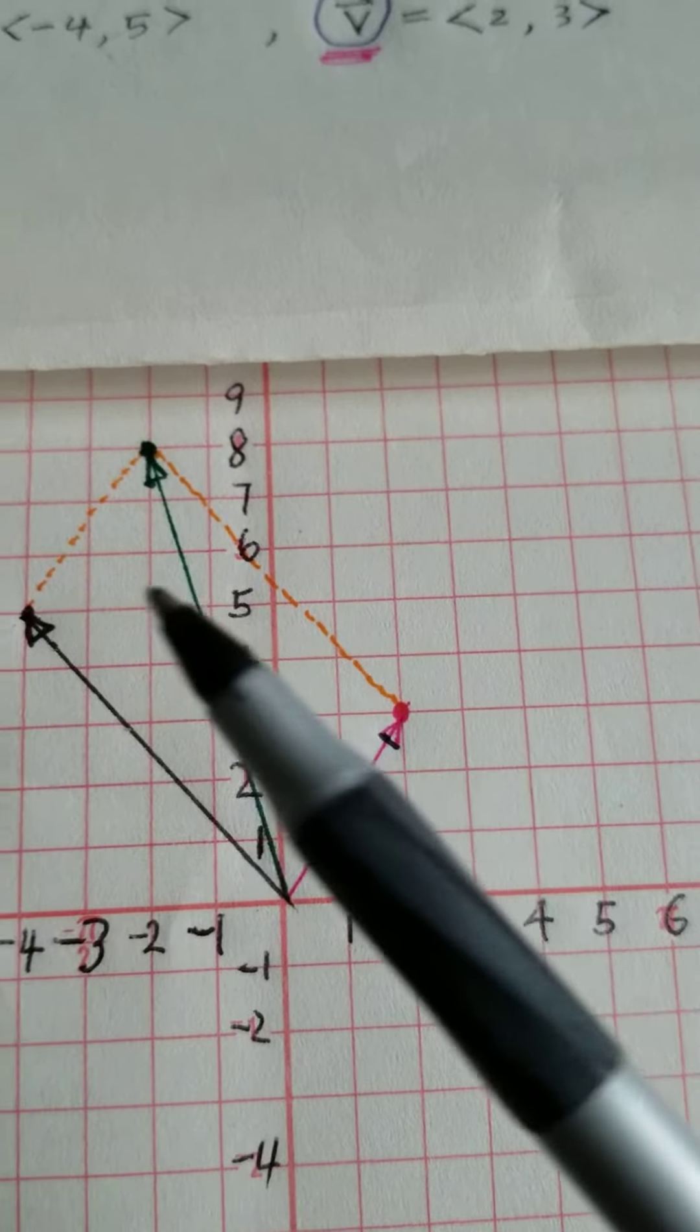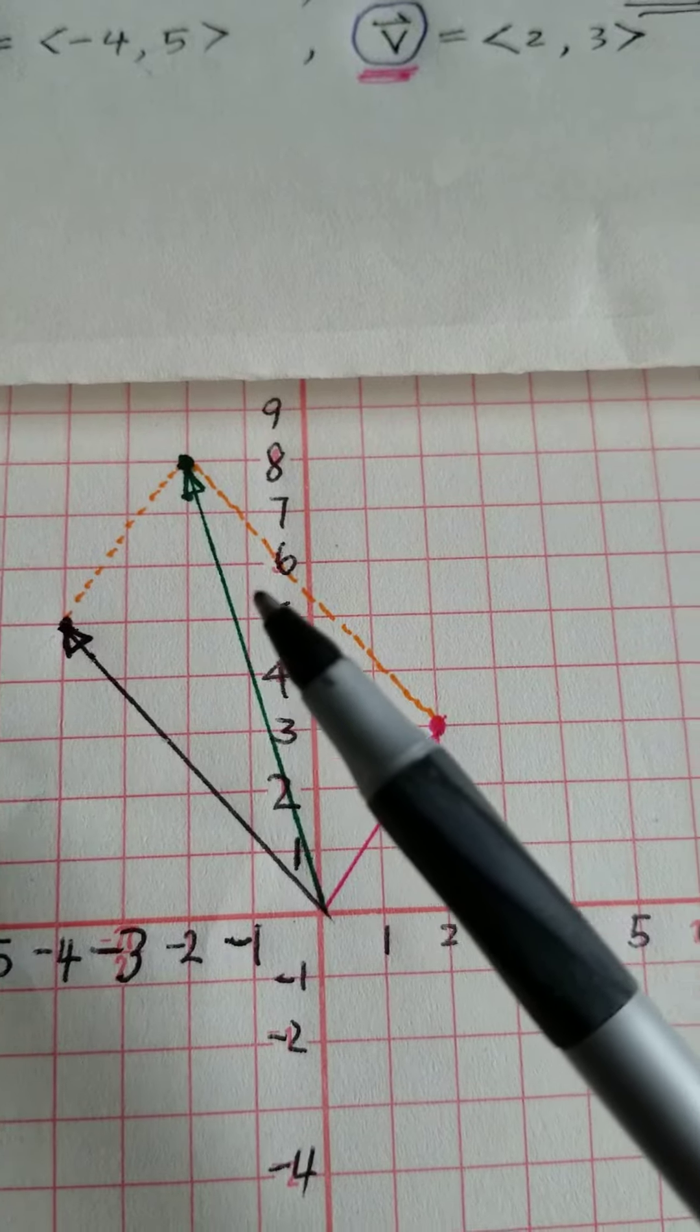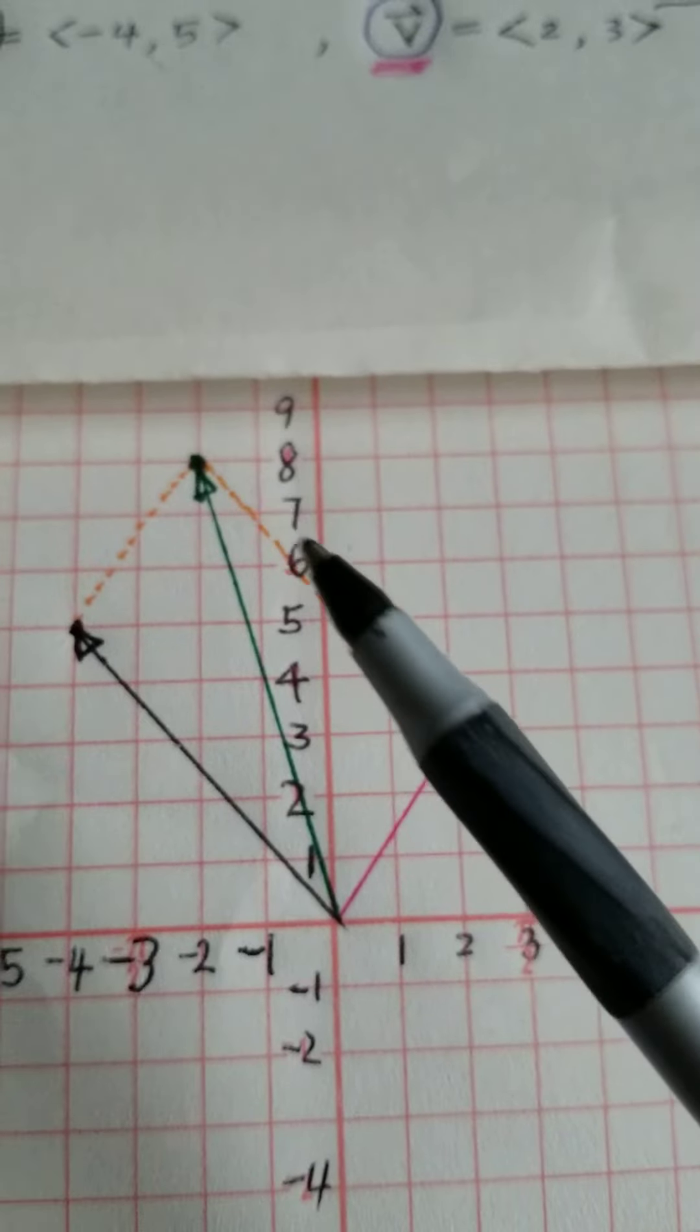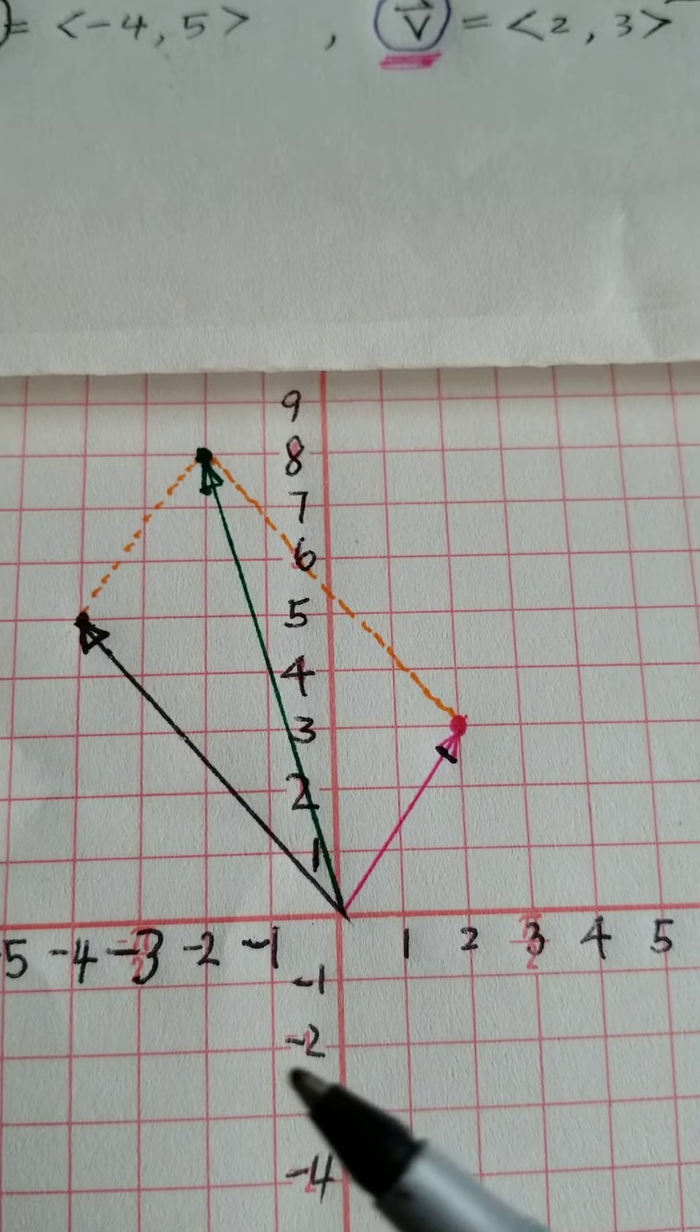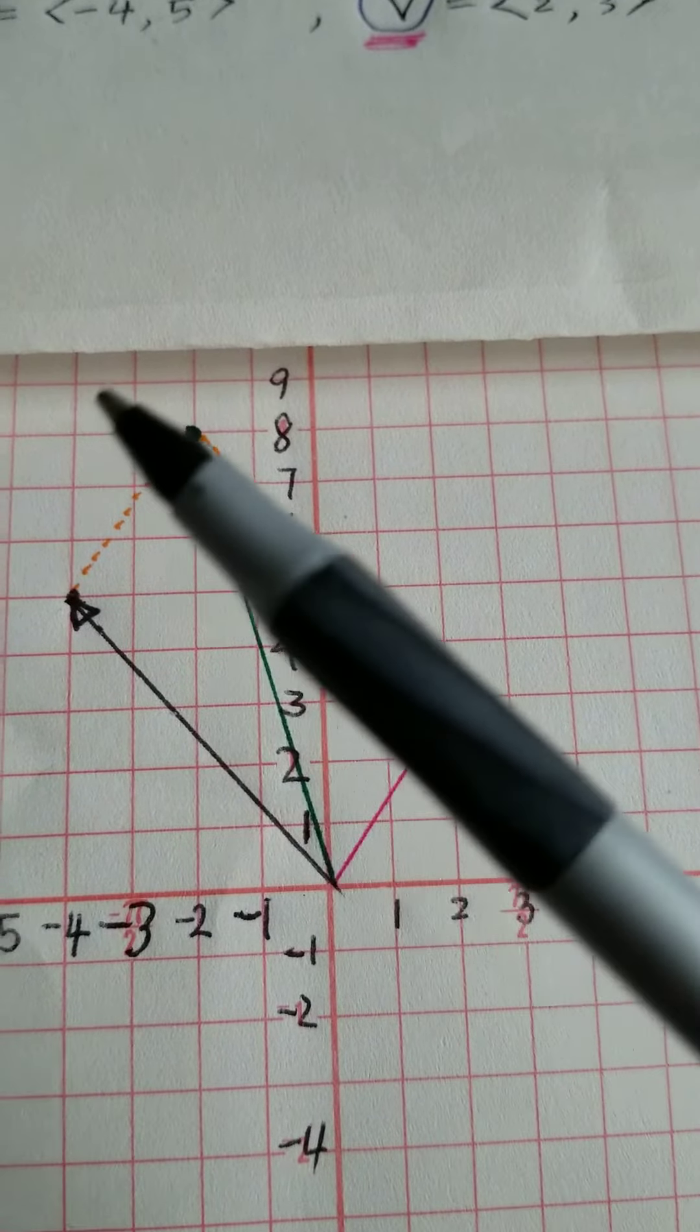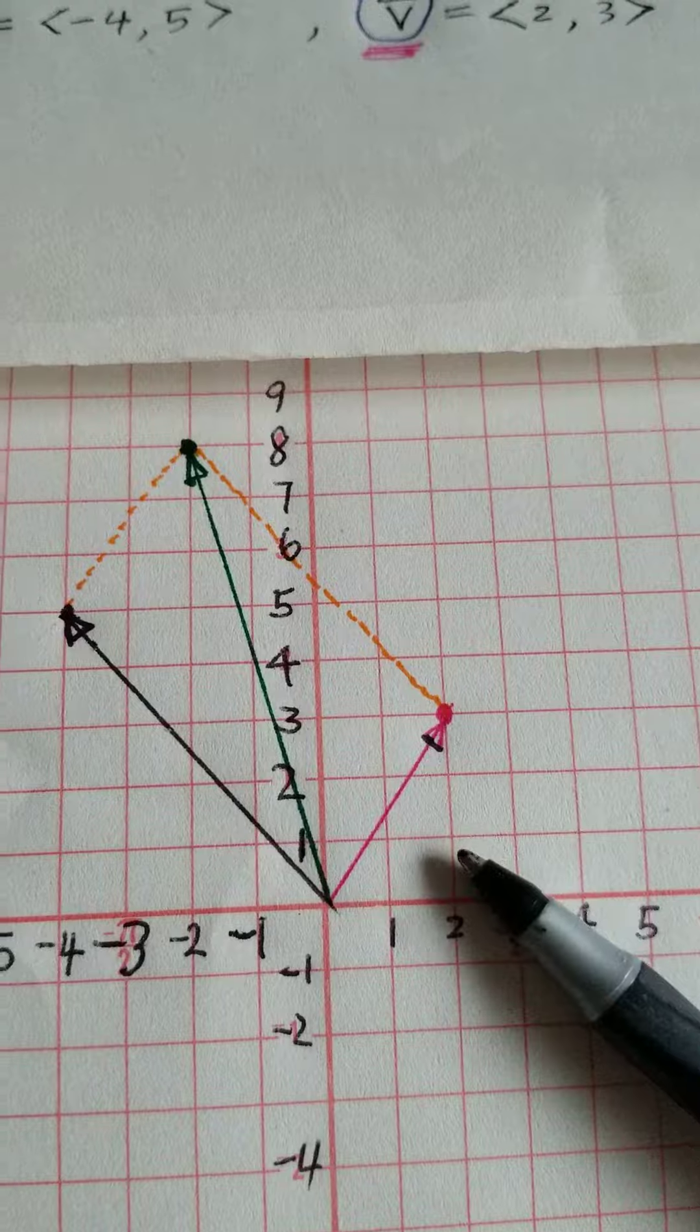Then we have to do 2 and 3 to make a parallelogram, right. Draw the orange lines. Then the final line, green, is our answer. We'll be back later, I'm going to go check.